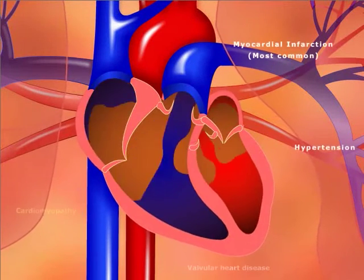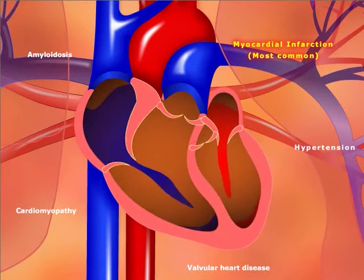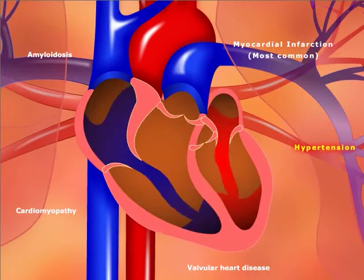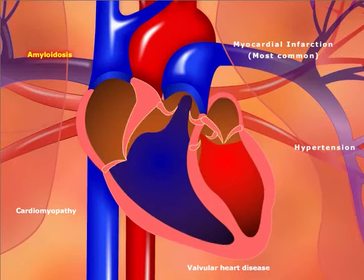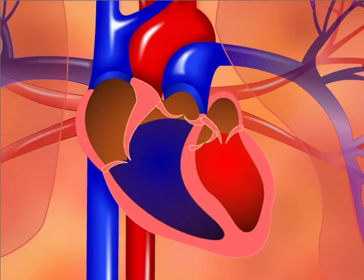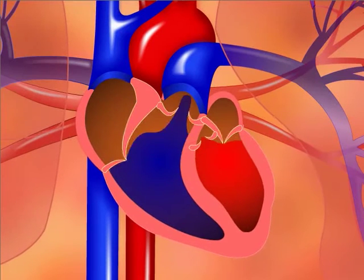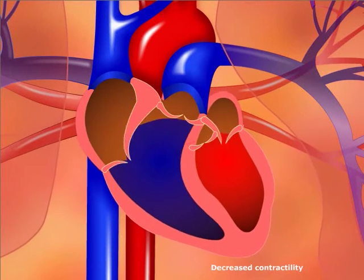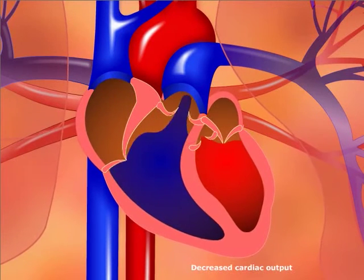A variety of conditions can predispose to CHF, including myocardial infarction, hypertension, valvular heart disease, cardiomyopathy, and amyloidosis. The pathologic changes caused by these conditions lead to decreased contractility and, subsequently, decreased cardiac output.